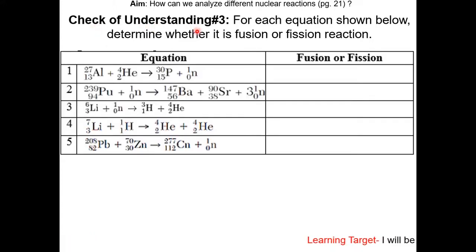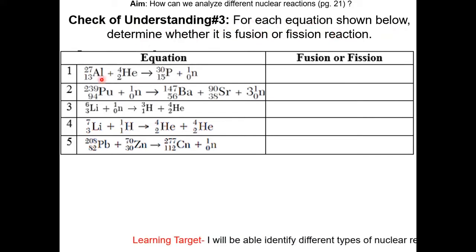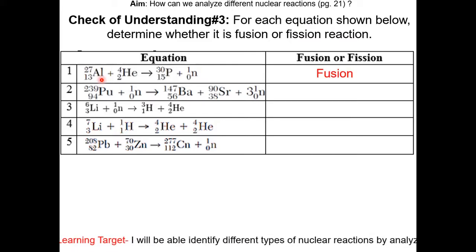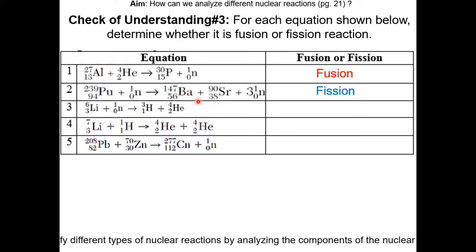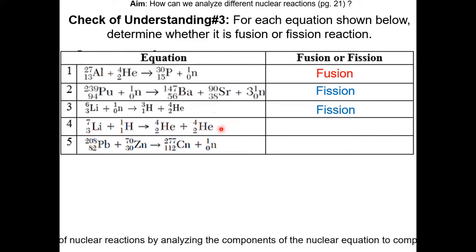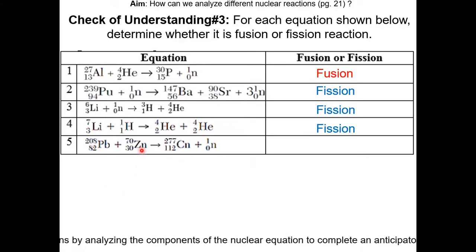Check of understanding number 3: for each equation shown below, determine whether it is a fusion or fission reaction. Question 1 is fusion, because you are going from smaller nuclei to bigger nuclei. Question 2 is fission, because you are going from bigger to smaller. Question 3 is also fission for the same reason. Question 4 is fission for the same reason. Question 5 — you combine smaller nuclei into a bigger nucleus, so it is fusion.